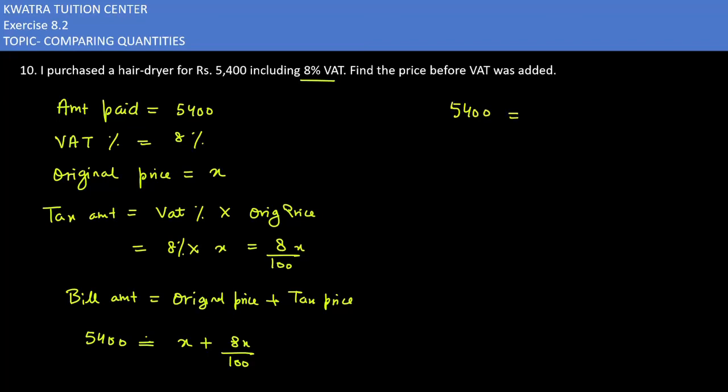Right side will be your value. It would be 100X plus 8X because we have LCM. So first term will be multiplied with 100. So it is 5400 equals 108X over 100.